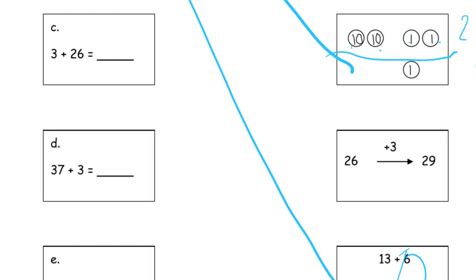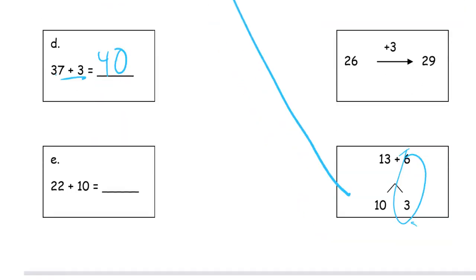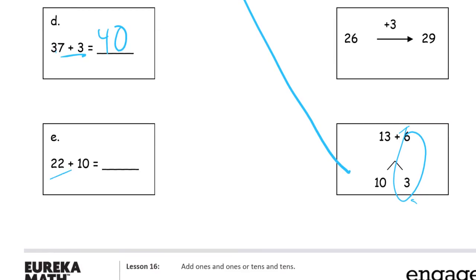Now let's look at the others. 3 plus 26. Again, I'm going to look at this 3 plus 6 and think that's a 9. And then add it to the 20 for 29. And here I see this 7 plus 3. That's a 10. So 10 plus that 30 is 40. And here 22 plus 10. The way I would do that one probably is I'm thinking 20 plus 10, and then I would add the 2. The 2 1s. So I would look at the 10s digits. I'm going to make 30 there and then add 2 1s for 32.